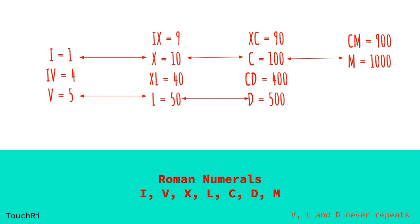D represents 500, and CD represents 400. Finally, 1000 is represented by M, and 100 preceding M, that means CM, represents 900.